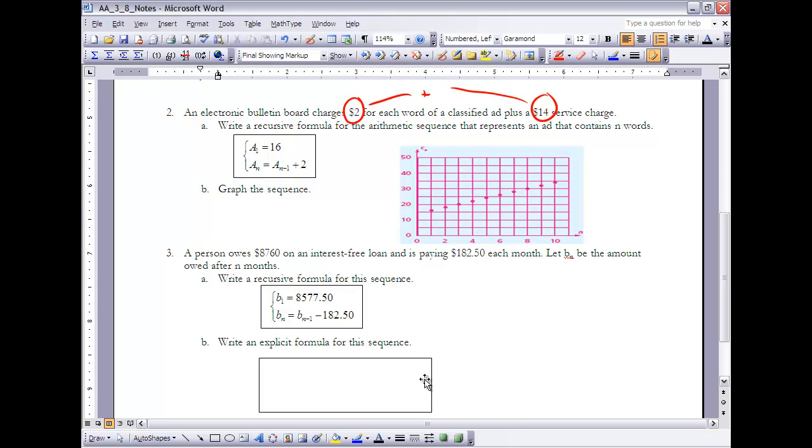Now, if I write that explicitly, once again, I only need two numbers. I need to know what is that first value, and then I need to know that constant difference. And once I have that, I can write a formula for it, and then I can go ahead and use algebra to put that into slope-intercept form. So if I distribute my $182.50 to n minus 1, and then I combine my like terms, I'd have a negative $182.50 times n plus that original amount of $8,760. So notice how this $8,760, it really represents the value after zero months. So that would be our y-intercept.